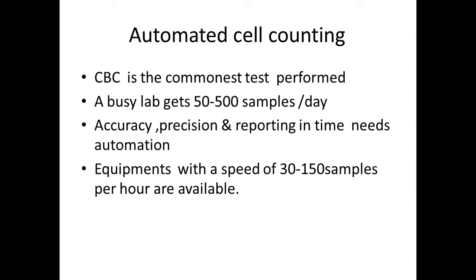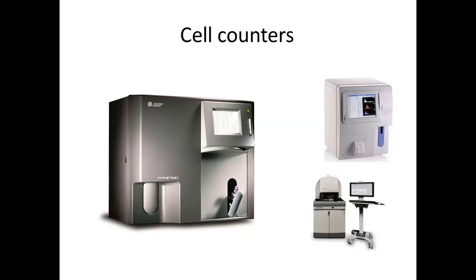Various types of automated cell counters are available. These cell counters are completely automated or semi-automated. Semi-automated means the sample has to be aspirated manually — that is the difference. In the case of a fully automated cell counter, the sample is also taken care of by the cell counter.